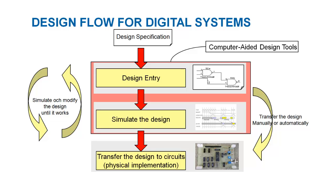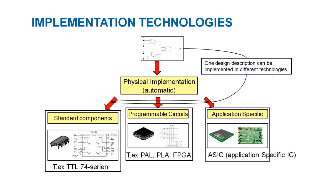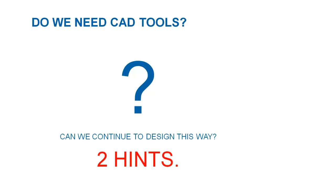Once we are done, we transfer the design into implementation. Implementation can be done automatically using a CAD tool, or we may go into the laboratory or workshop. We can use standard components, analyze their behavior from the data sheet, and connect them, or we can buy programmable components and go into the fabrication lab to implement an application-specific integrated circuit that meets our objective.